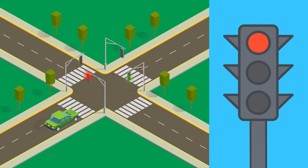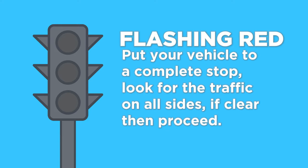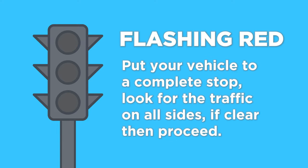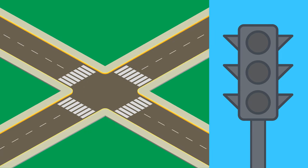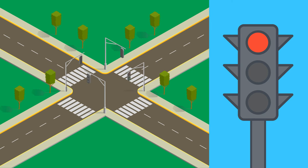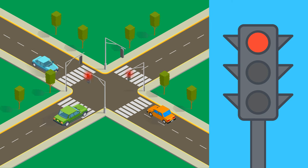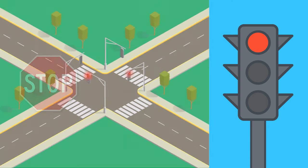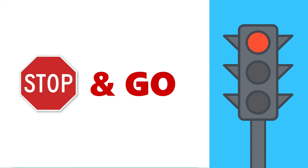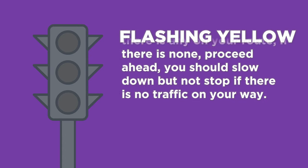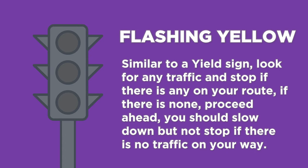Flashing red light: put your vehicle to a complete stop, look at all traffic, and proceed if clear. The easiest way to remember flashing red lights is to treat them the same as stop signs. Come to a full stop, check the intersection, and yield right of way to others who got to the intersection before you, then proceed when the coast is clear.